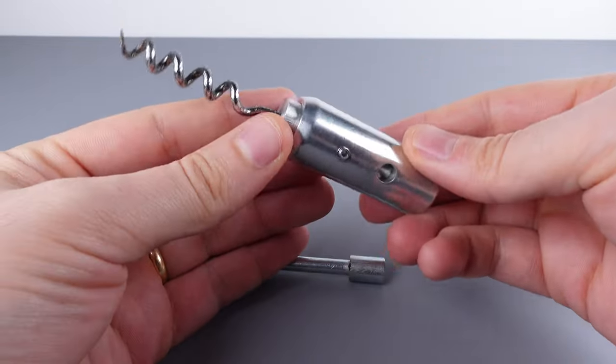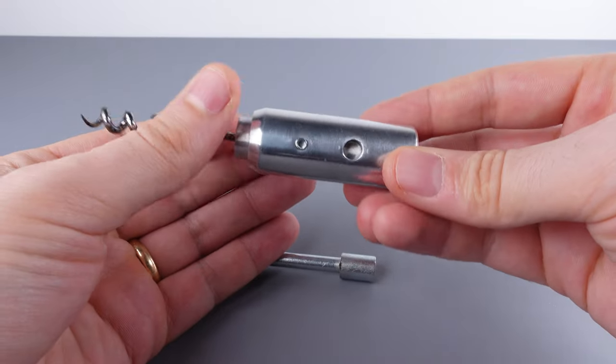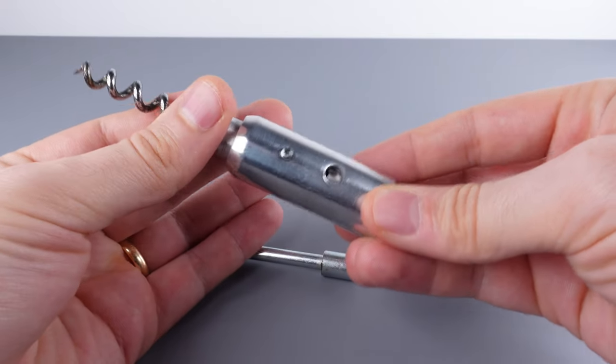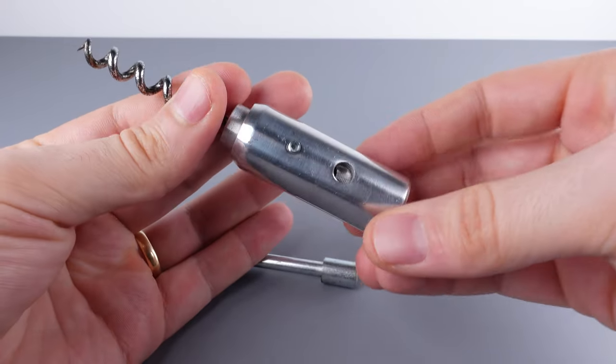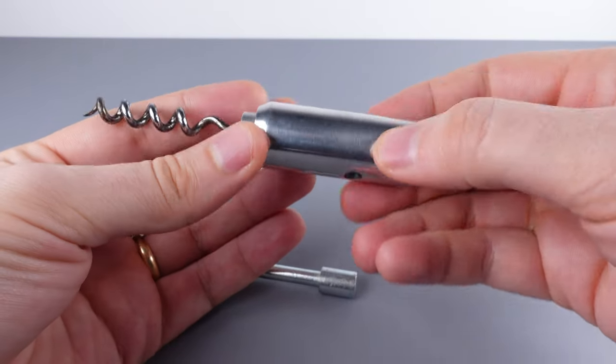Let's take a closer look at the corkscrew piece itself. The problem here is that we don't have a clear pathway through those two holes.